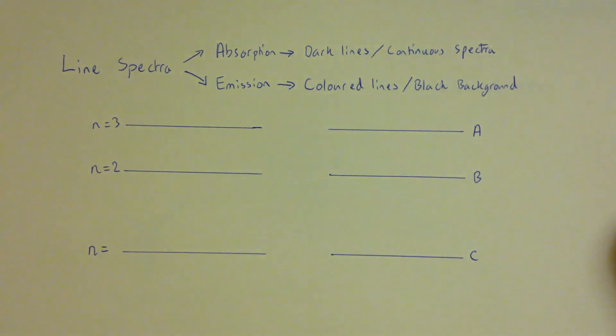A line spectra is an observed pattern that we get when we shine light through an element and observe the light that has either absorbed or emitted from shining it through that element. Now the element can either be in the gas state or in the solid state.